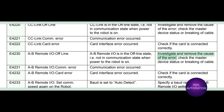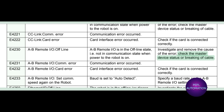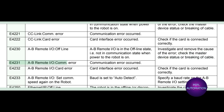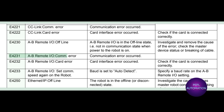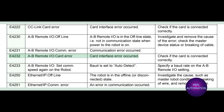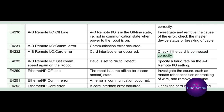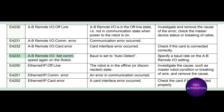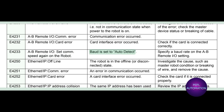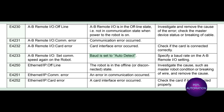Investigate and remove the cause of the error. Check the master device status or breaking of cable. E4231 AB remote IO com error: a communication error occurred. E4232 AB remote IO card error: a card interface error occurred. Check if the card is connected correctly.